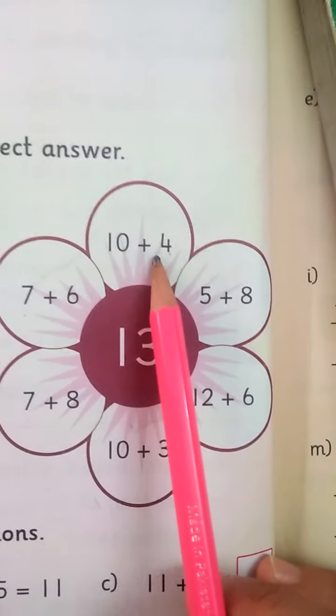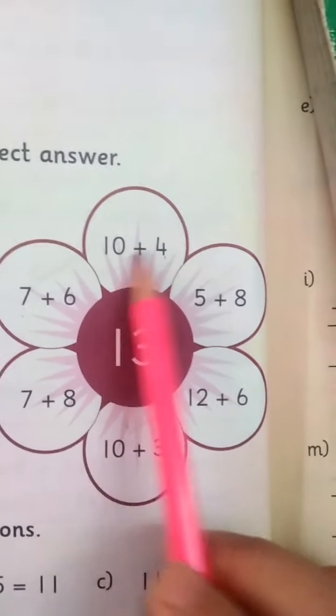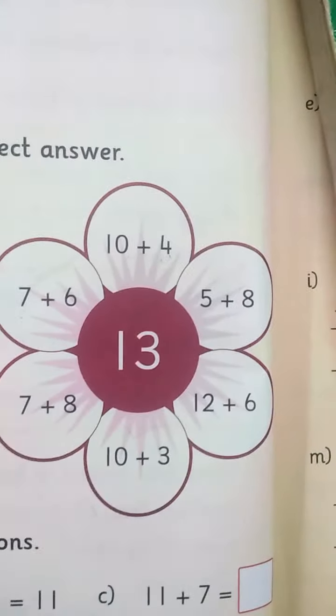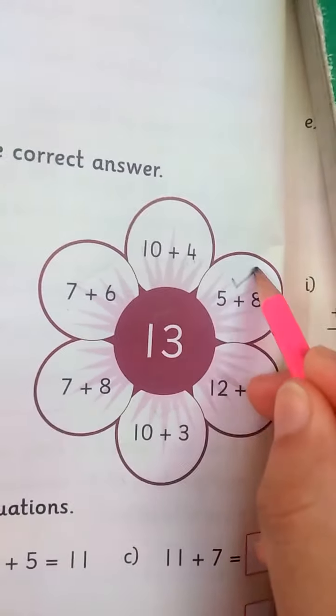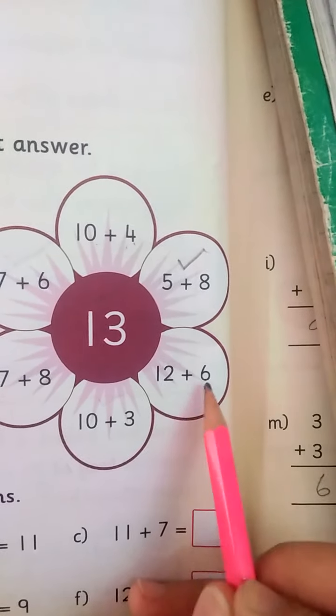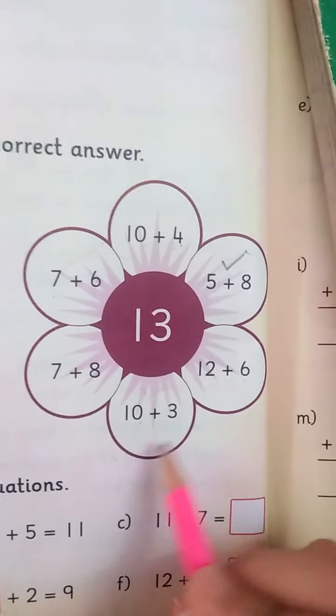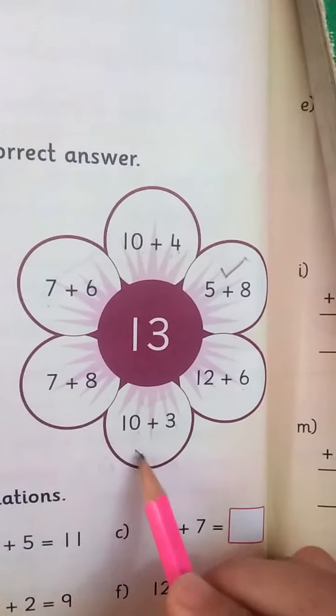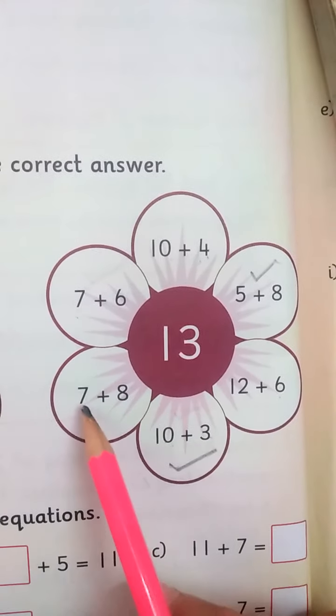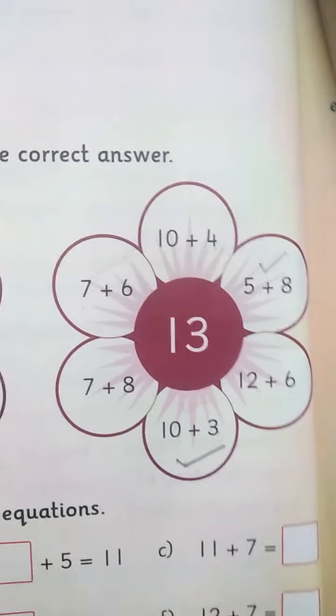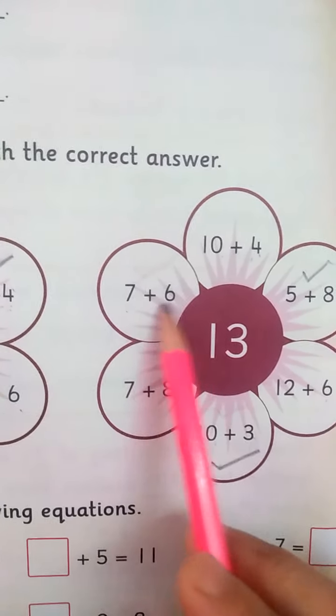7 plus 6 is equal to 13. 10 plus 4 is equal to 14. 7 plus 6 is equal to 13.